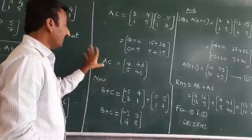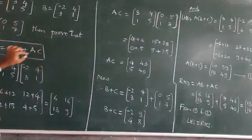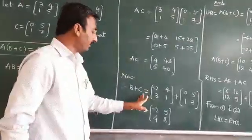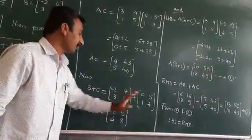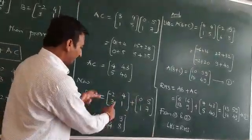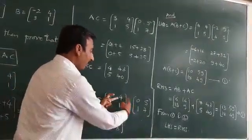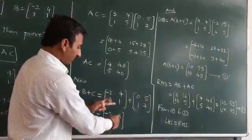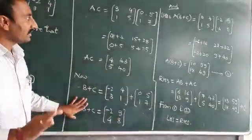After getting AB and AC, we go for B plus C. B plus C is very simple, just add B and C. Here I have taken B and C matrices. Respective elements must be added: -2 plus 0 is -2, 4 plus 5 is 9, 3 plus 1 is 4, 1 plus 7 is 8. Now I got B plus C also here.